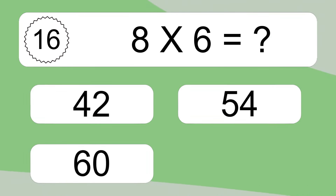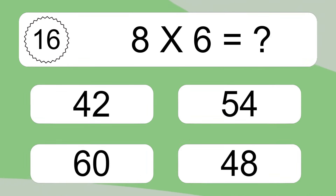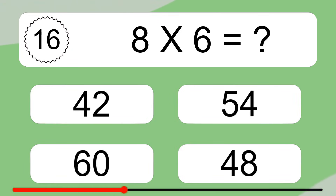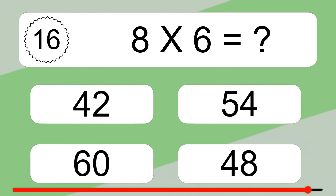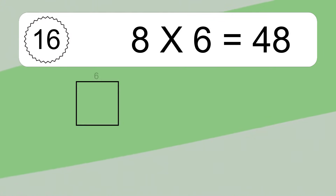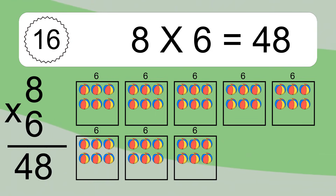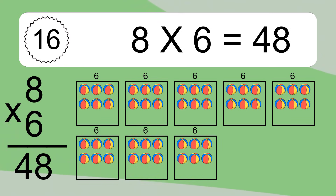8 times 6 equals what? 8 times 6 equals 48. We have 8 boxes and each box has 6 colorful balls inside. If you count all the balls in all the boxes together, you will have 8 times 6 balls. This equals 48 balls.